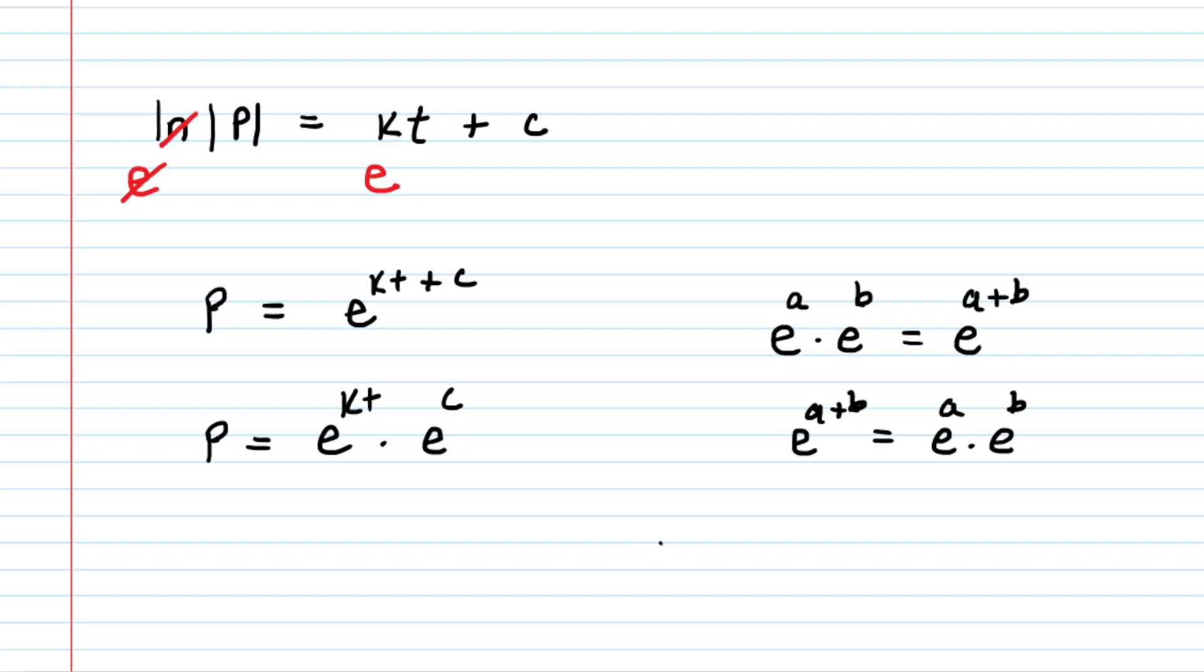Now, we know that the initial population at time zero could be represented by the symbol P₀. So what we'll do is we'll rewrite the left side so that it's P(t). And then we're going to plug in zero for time. You're going to end up with e^0 on the right side times e to the power of that arbitrary constant.